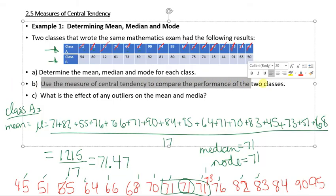Now B asks us to compare. So we did just compare. We compared which ones were smaller, which ones were larger. And what is the effect of any outliers on the mean and median?